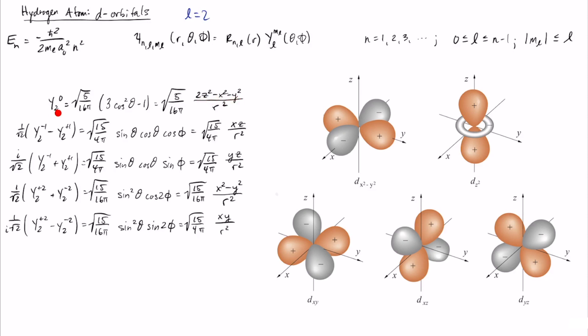So if we do this for y20, so this is l equals 2 ml equals 0, then we see that this ends up looking like 2 z squared minus x squared minus y squared. And historically now this gets called dz squared and this is the function that's shown down here. And we'll talk about the shapes of these once we're done talking about the linear combinations.